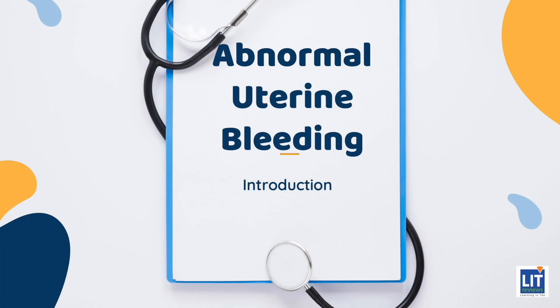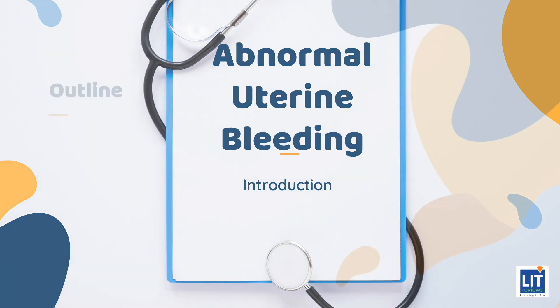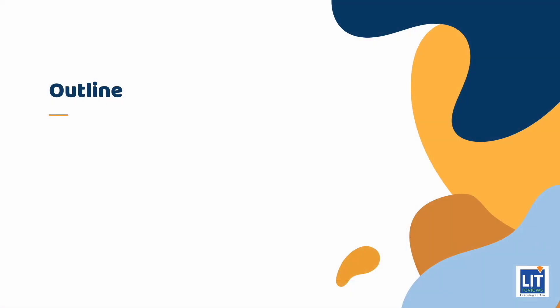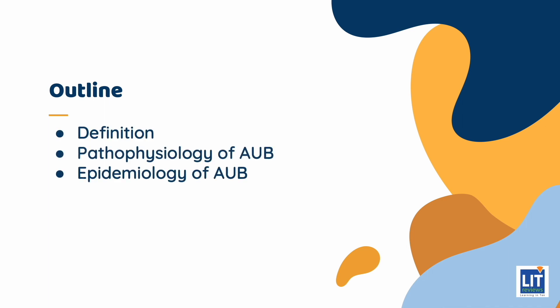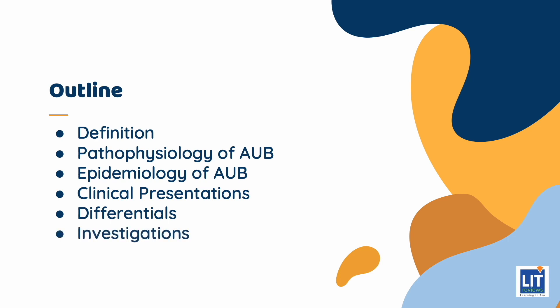Hello! Today we are going to discuss the topic of abnormal uterine bleeding of an idiopathic cause. We will first give a brief introduction, including the definition, pathophysiology, and epidemiology of abnormal uterine bleeding. This is followed by clinical presentations, differentials, and investigations. In the later part of the presentation, we are going to talk about both medical and surgical management of abnormal uterine bleeding.